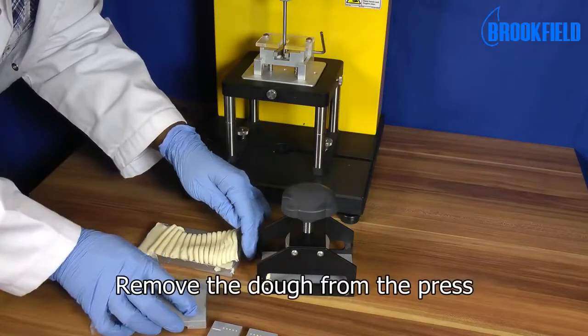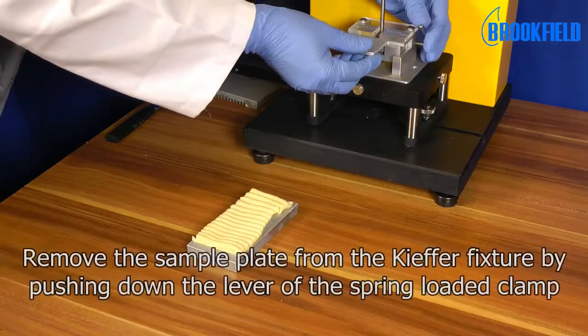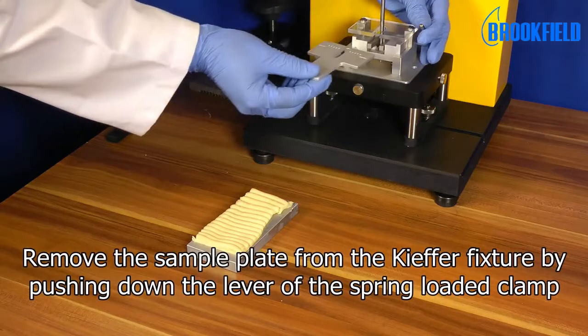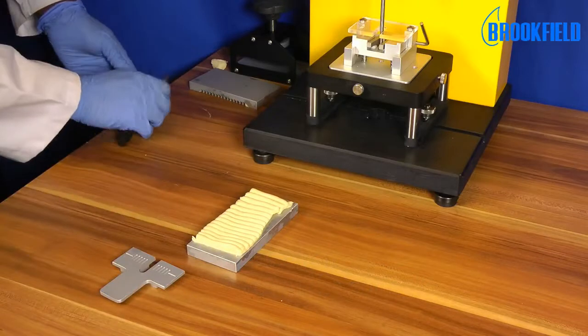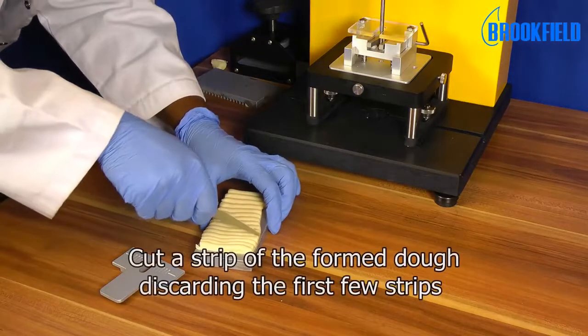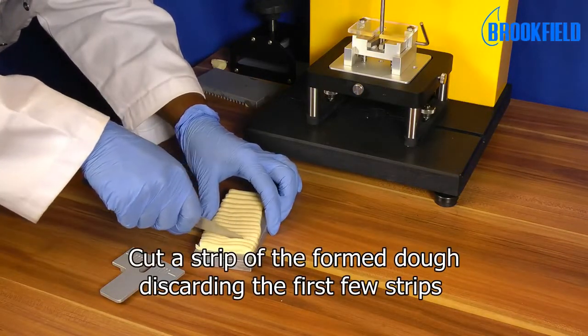Carefully remove the dough from the press. Remove the sample plate from the Kiefer fixture by pushing down the lever of the spring-loaded clamp. Cut a strip of the formed dough, discarding the first few strips.